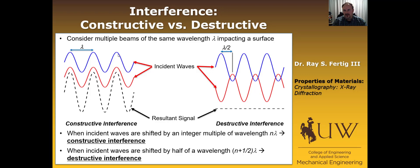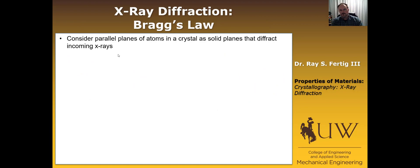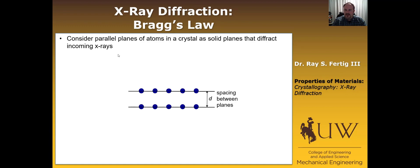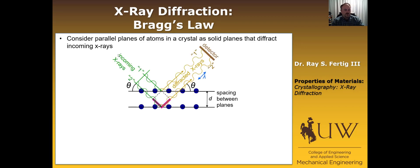That n·lambda term is going to be critical as we develop the formulas for X-ray diffraction. We want to consider parallel planes of atoms in a crystal as solid planes that will diffract incoming X-rays. Here's a fictitious set of atoms forming a plane — the planes are into the screen — with some spacing D. An X-ray source generates consistent-wavelength X-rays directed towards the sample.